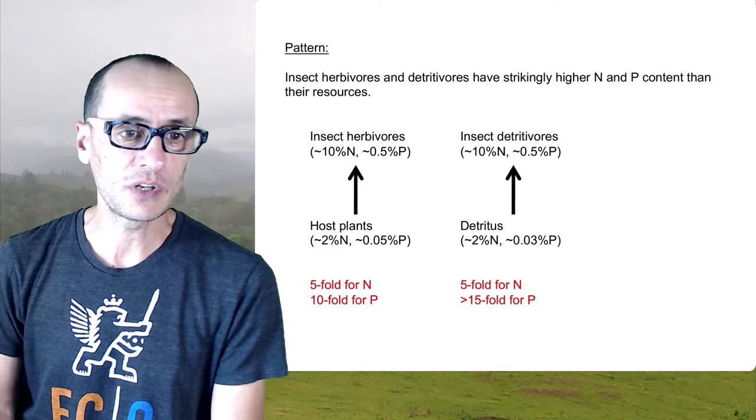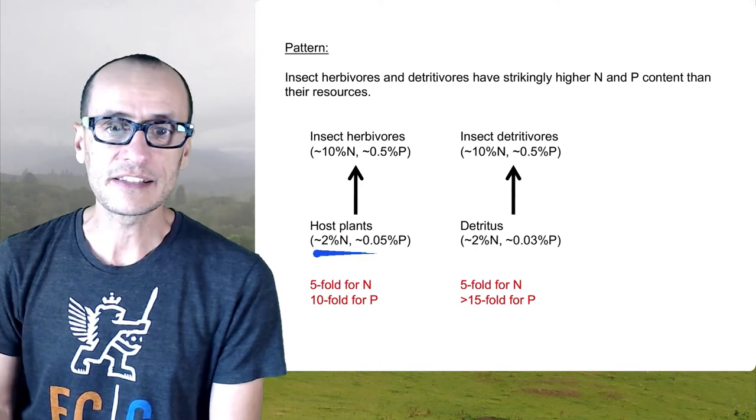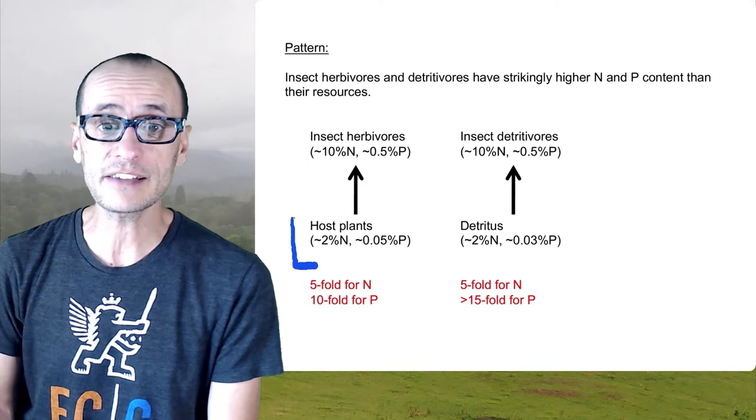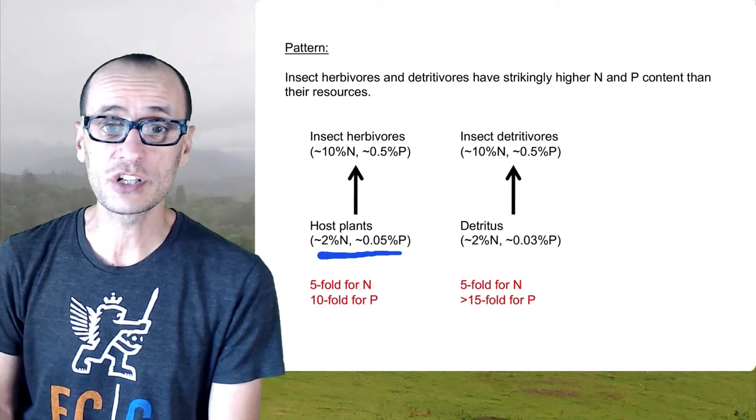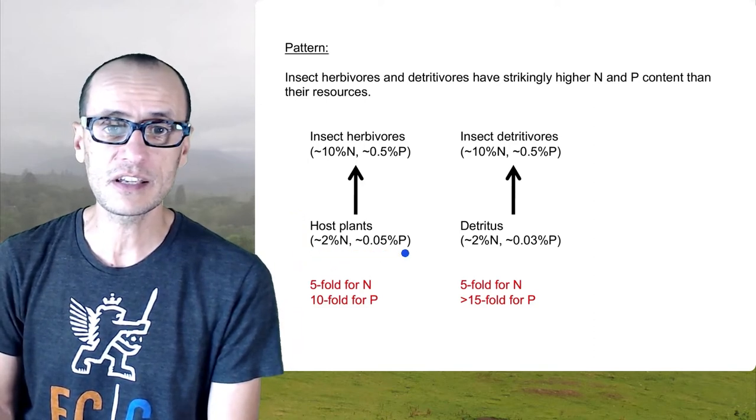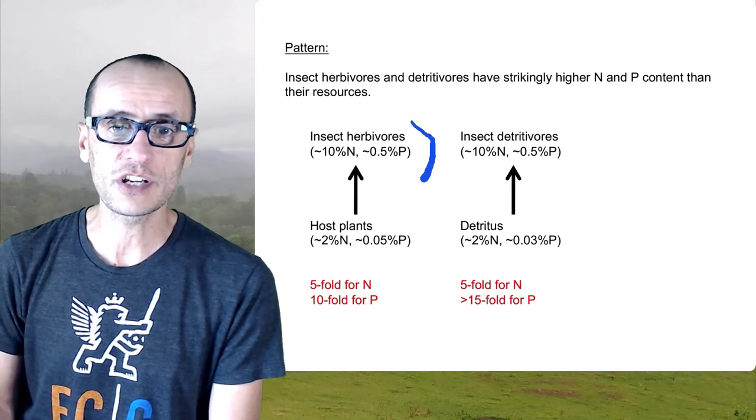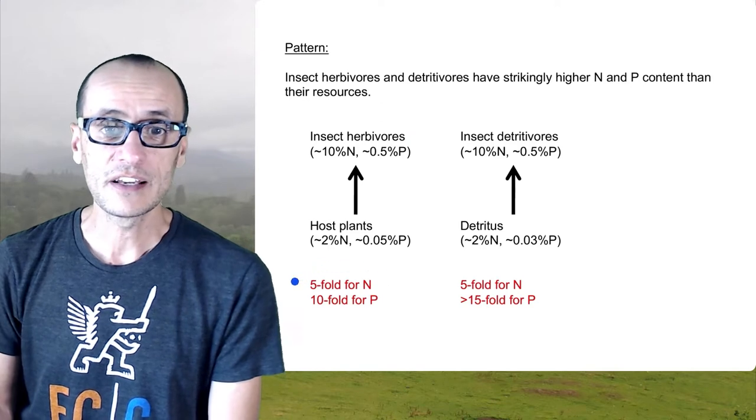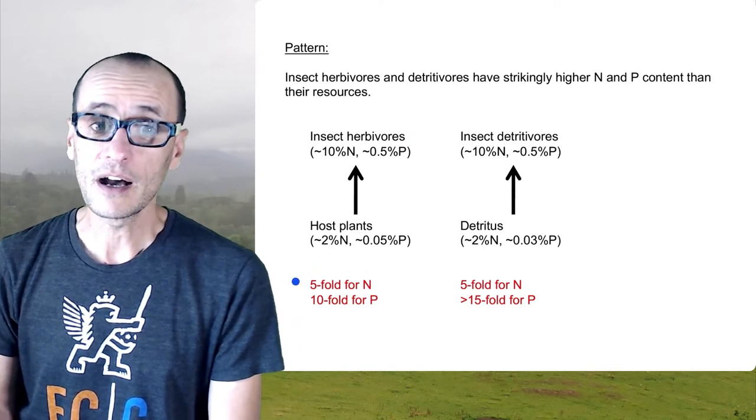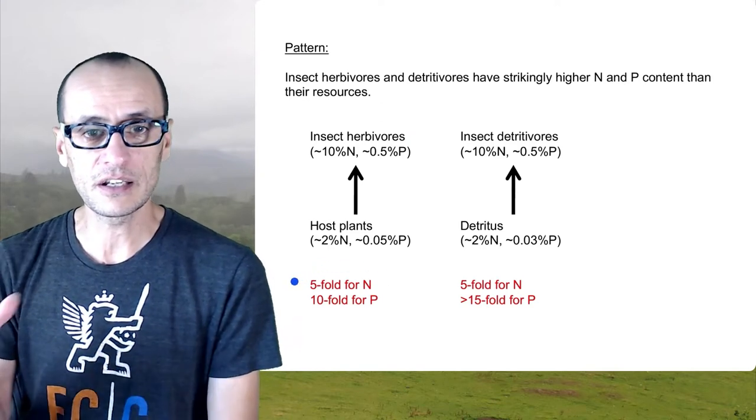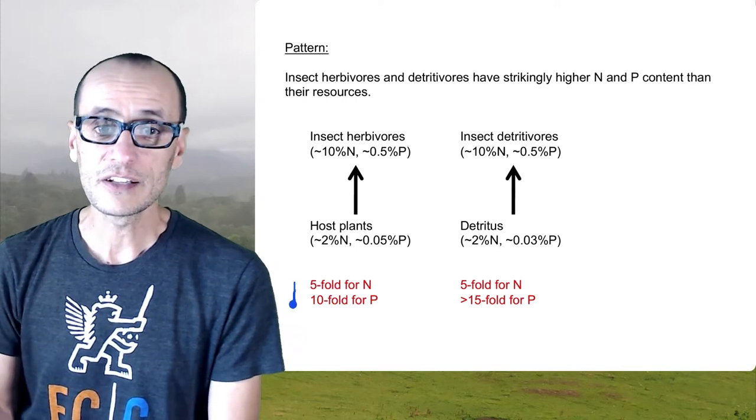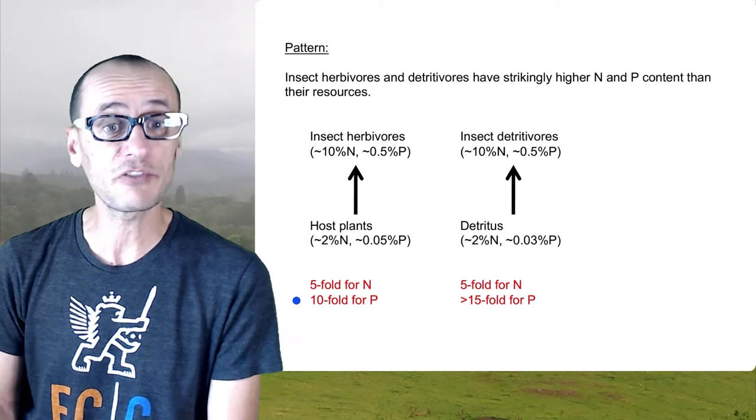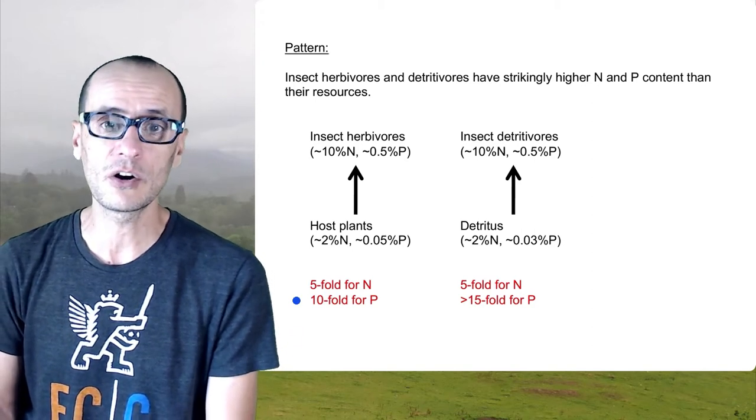The pattern that I showed earlier highlights the differences between the resource of most insects, plants, what the concentration of nitrogen and phosphorus is in them, and what the concentration of those elements is for herbivores. So we already said that there's about a five-fold higher demand of nitrogen in insects compared to their host plants. There's actually a tenfold higher demand in the tissues of insects for phosphorus compared to their host plants.